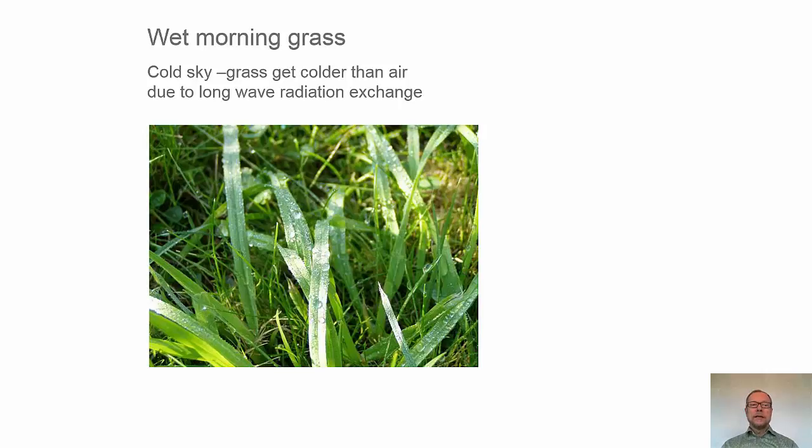Wet morning grass. We have discussed sky radiation and that surfaces like roofs on the garage in previous videos had lower temperature because of the sky radiation. And we see the same thing here. We find in the morning after a clear sky that we have dew in the grass and that's condensation of water from the air.